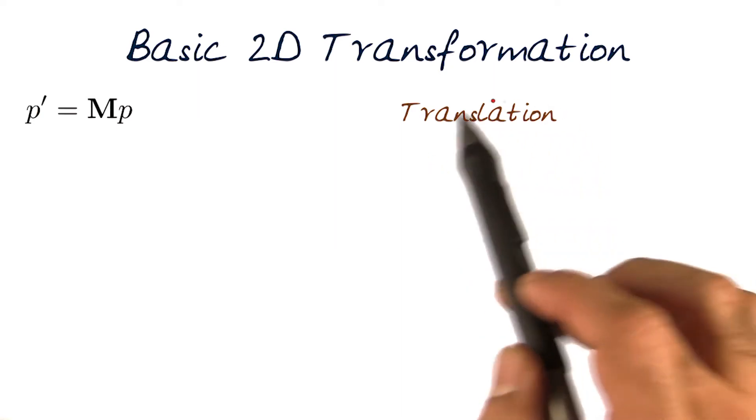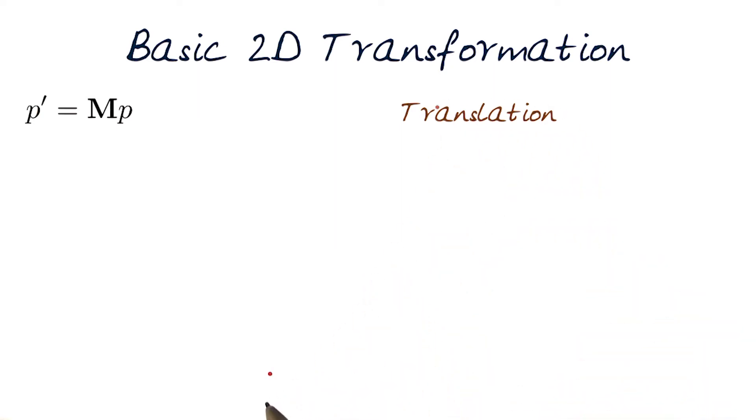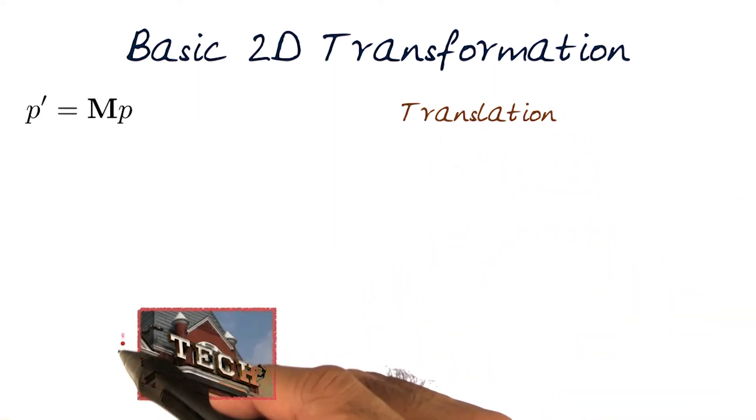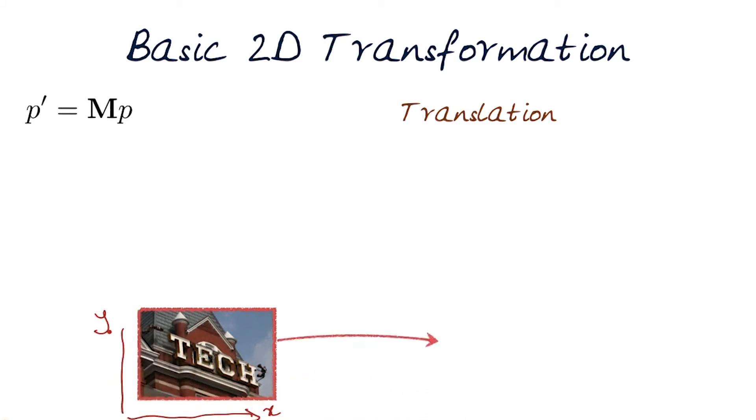Let's look at what we would do to get something simple as translation. So what we want to do for translation is, of course, we would have the axes for x and y, and we want to translate it to a different location.